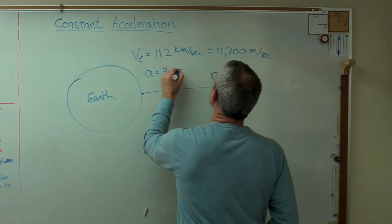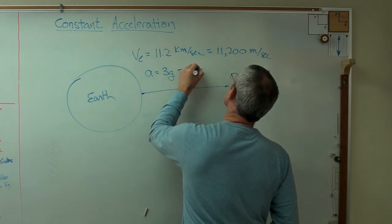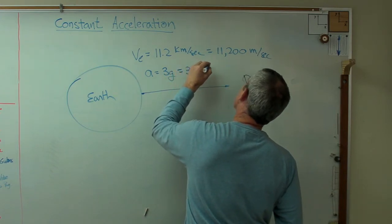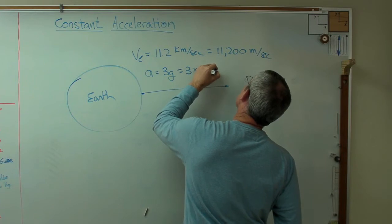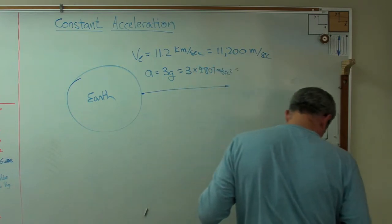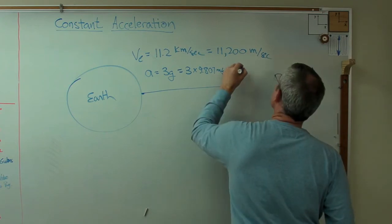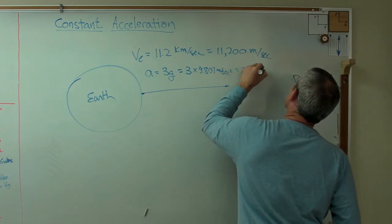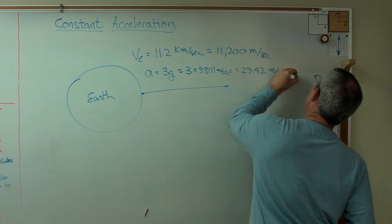So what's 3Gs? That's 3 times 9.8, was it 807, something like that, meters per second squared. And that works out to be 29.42 meters per second squared.